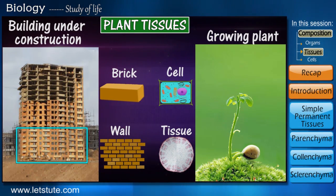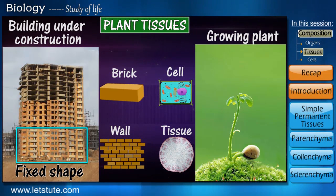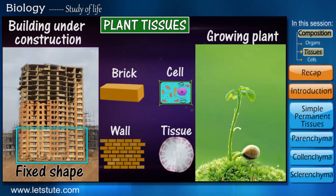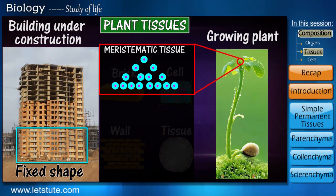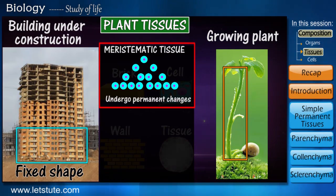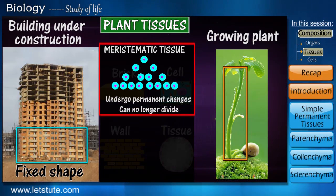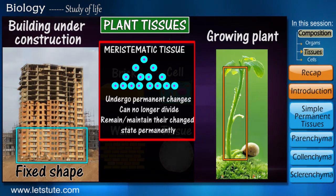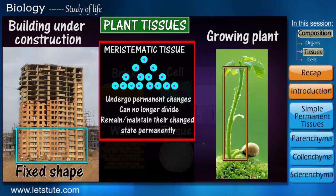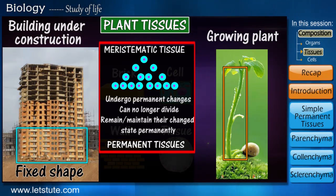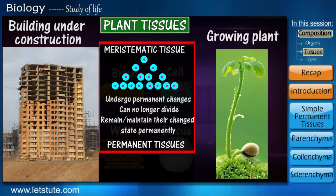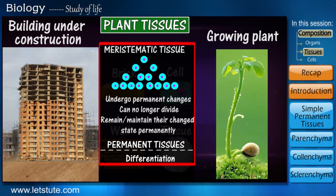As the bricks are added, the lower portions assume a fixed shape. In a similar way, as the plant is growing, the meristematic tissue leaves behind cells which undergo permanent changes. Due to these changes, they can no longer divide and will hence remain in their changed state permanently. Since they will remain the same way till the plant dies, they are called permanent tissues.